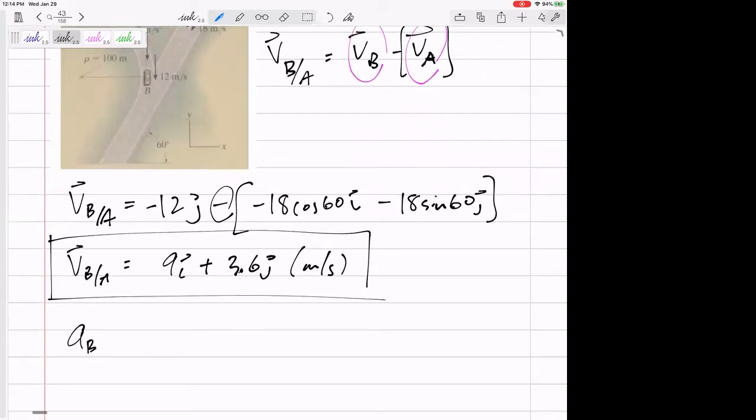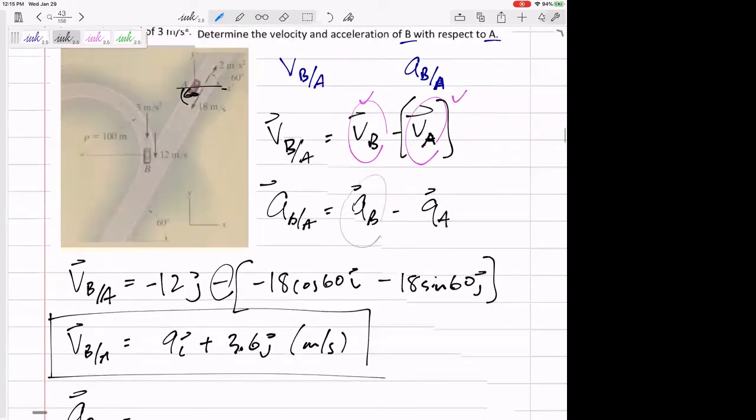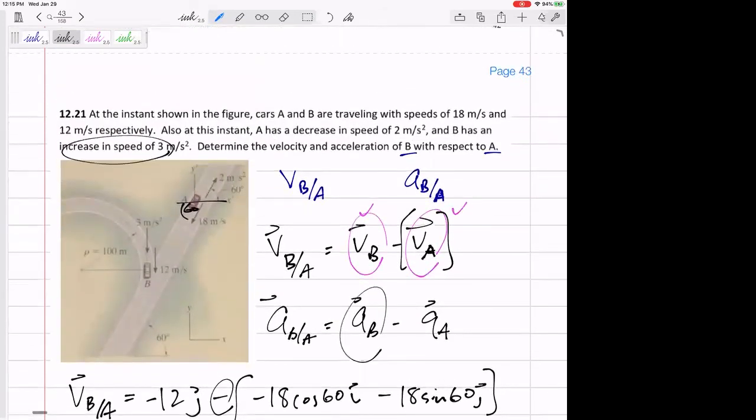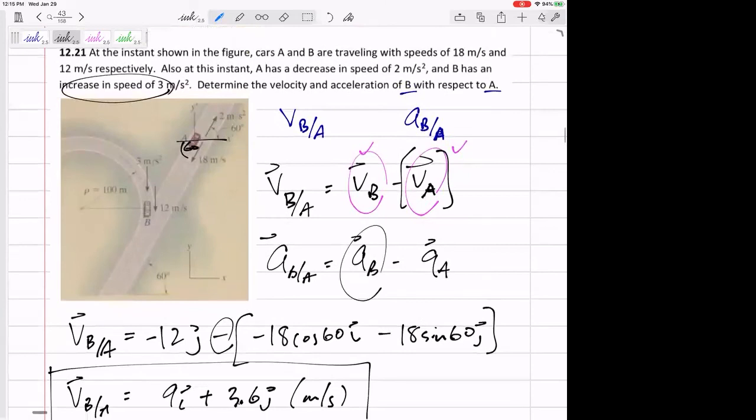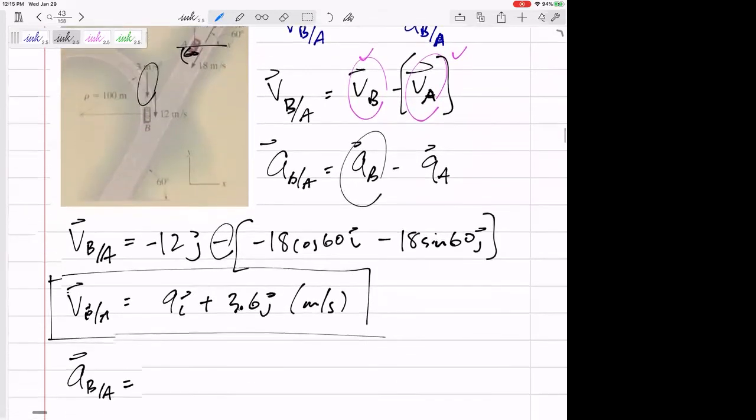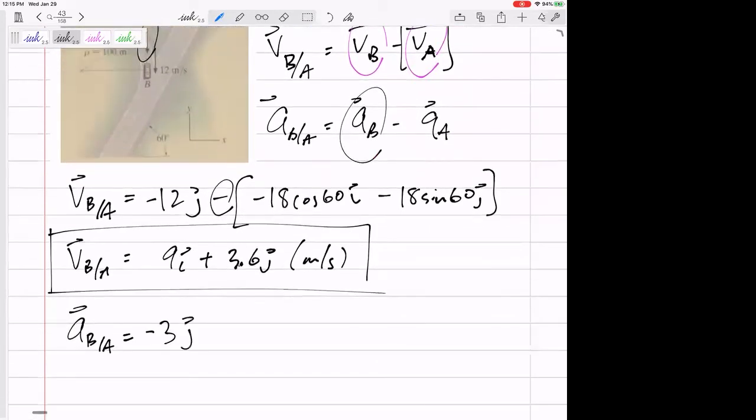All right. The acceleration of B slash A would be acceleration of B minus acceleration of A. All right. What is the acceleration of B? B is increasing its speed, and just kind of notice where it's pointed. It's actually drawn on here for you, but when something is going that direction and it's increasing, it's accelerating that direction. So that would be 3 in the negative J because it's pointed down. All right. So the acceleration of car B is negative 3J.